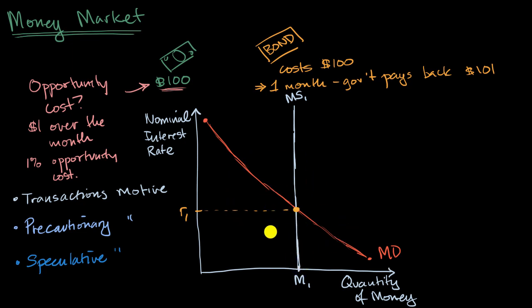So now that we have this neat little model for our money market, let's think about what would happen in different situations. Let's think about a situation where, for whatever reason, people lose confidence in the electrical grid. What would happen to the demand curve for money? And let's call this the MD sub one. Pause this video and think about it.